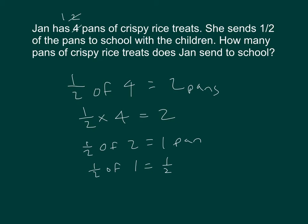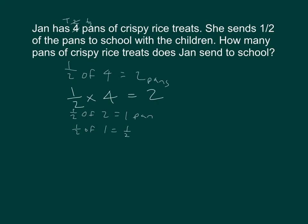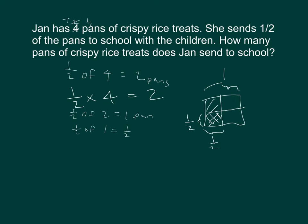What if she had one half of a pan, and she wants to send half of it to school — half of a half? We start with half of a pan. The whole pan is one, but we only have half of a pan, and then we're taking half of a half. So one half of a half is one fourth. Half of a half is one half times one half, which equals one fourth. She sent one fourth of a pan to school.